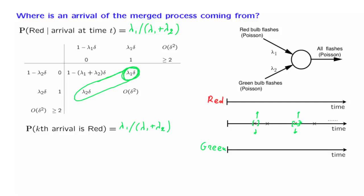And because of this, one can argue formally, but hopefully this is intuitive enough, that the origin of this arrival and the origin of that arrival are independent events.